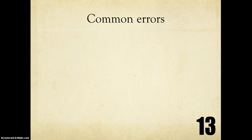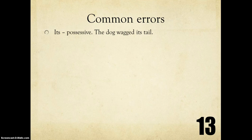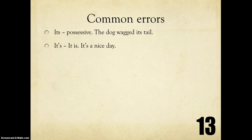Other common errors to watch out for: its — I-T-S — is a possessive. The dog wagged its tail. It's — with an apostrophe S — means it is or it has. For example, it's a nice day.